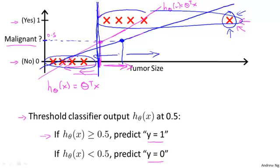So, applying linear regression to a classification problem usually isn't or often isn't a great idea. In the first example, before I added this extra training example, previously linear regression was just getting lucky. But usually, applying linear regression to a data set, you might get lucky, but often it isn't a good idea. So, I wouldn't use linear regression for classification problems.